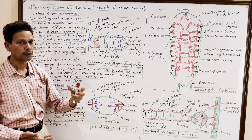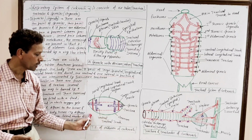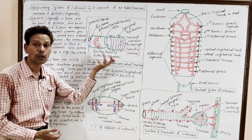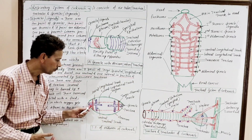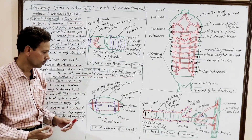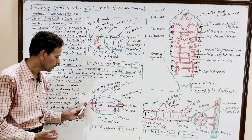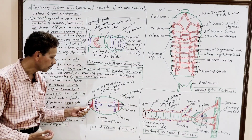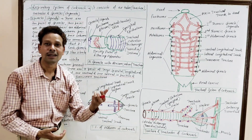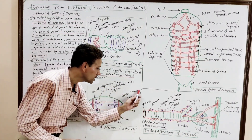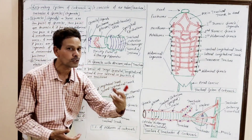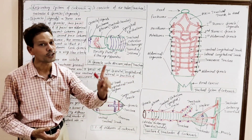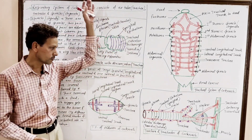During inspiration and expiration, in the transverse section of the abdomen of cockroach, the upper dorsal sclerite is the tergum and the ventral sclerite is the sternum. Between the tergum and sternum, the trachea open by spiracles or stigmata. The tergum and sternum are interconnected by muscles called tergosternal muscles. These tergosternal muscles of the abdomen play an important role in inspiration and expiration.